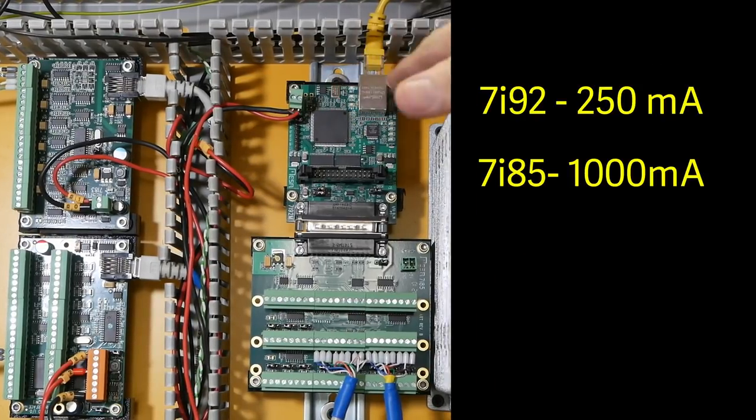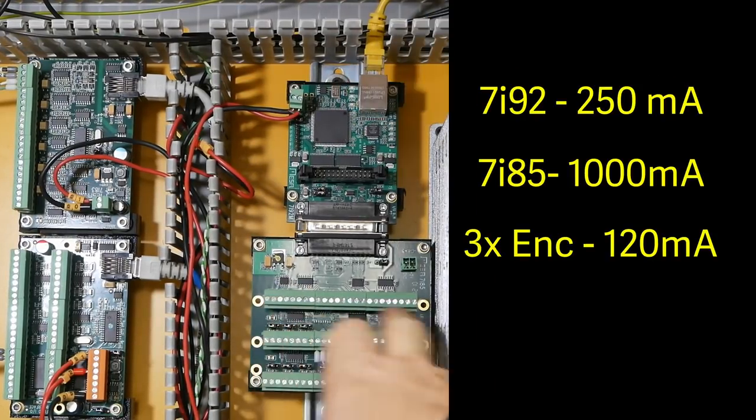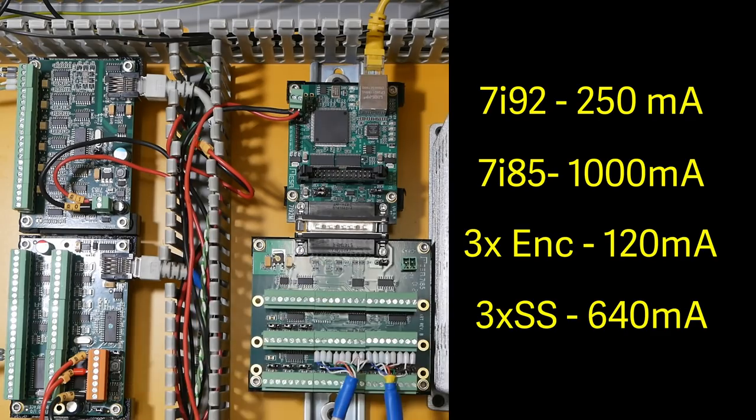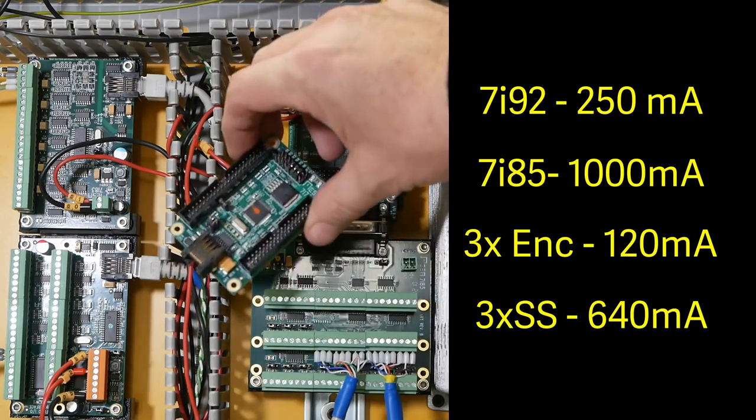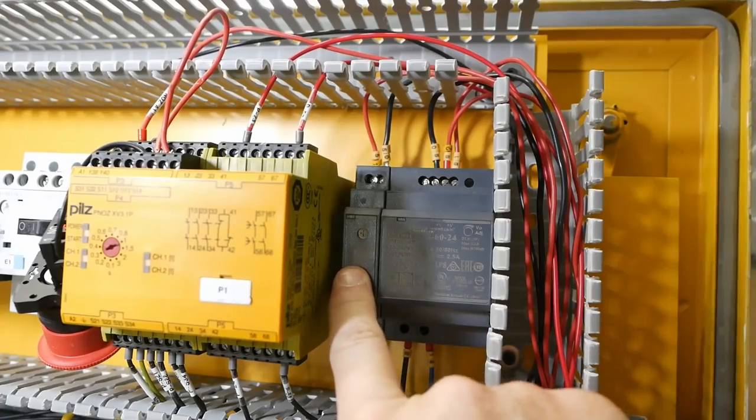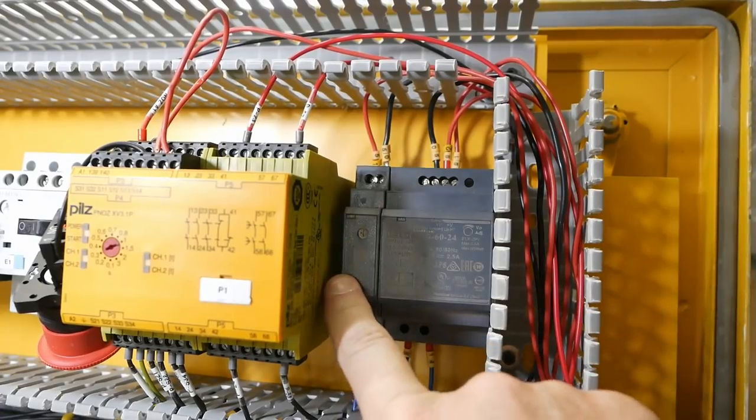Once you add up the current requirements of the brain, the encoders, and powering the smart serial connections to other boards, of which there are three. Wow, it's more than 2.4 amps. So I've ordered a new power supply to replace it. This time 60 watts instead of 15. Mail time.